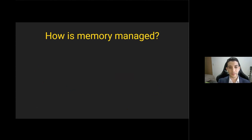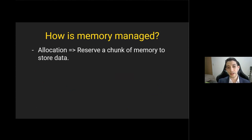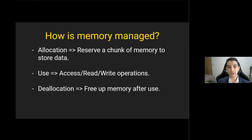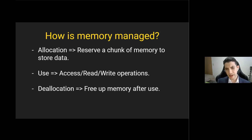Regardless of how memory is managed — whether manually or automatically — it is always done in three steps. The first step is memory allocation, where we reserve a chunk of memory and store data in it. Then we have the read and write operations, where we write something to memory, access it, and read it. The last step is memory deallocation, when we don't need the memory anymore and we free it up.